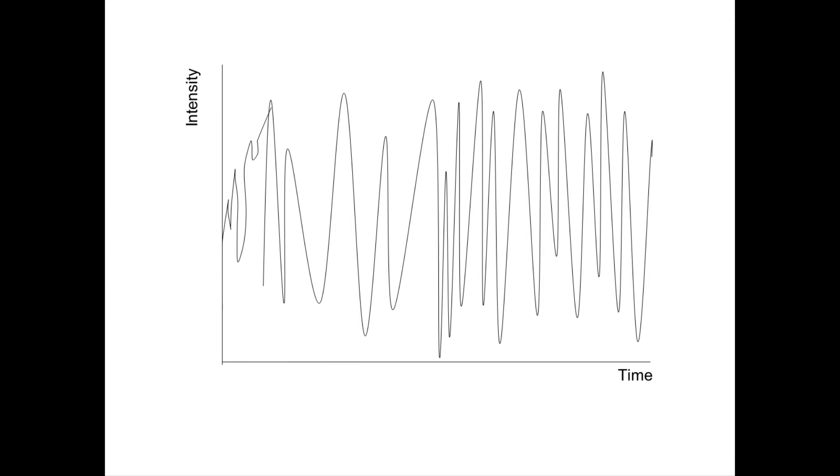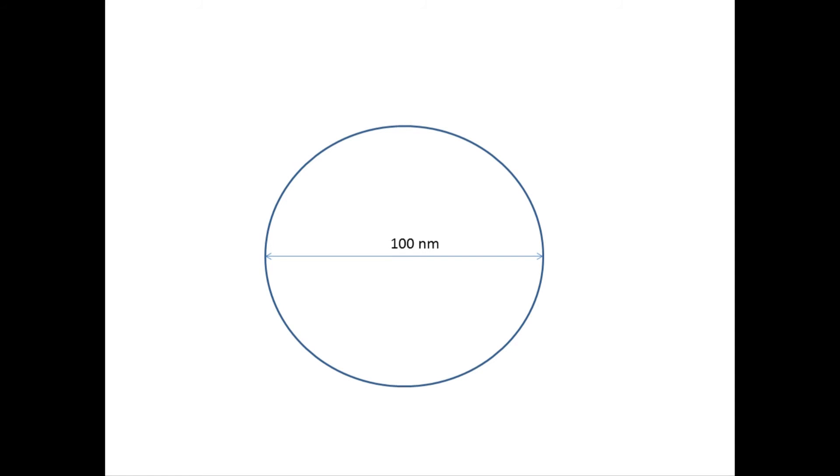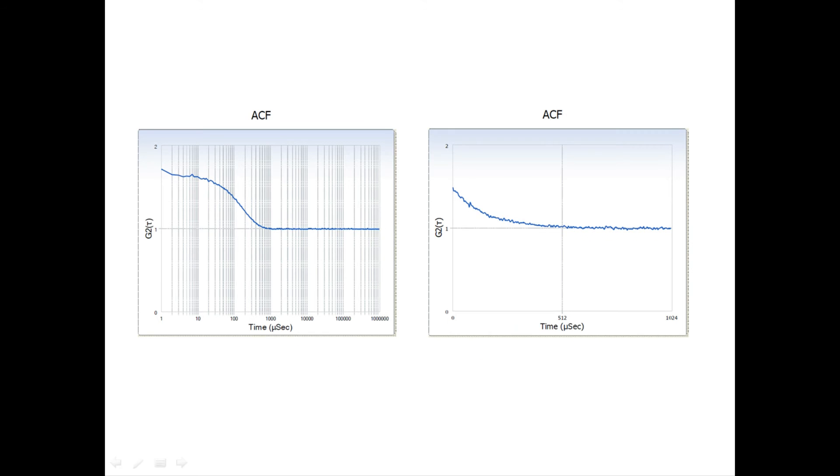For example, a sample with a known diameter of 100 nanometers was evaluated twice, the first with a log correlation and then with a linear correlation. Let's compare the results.